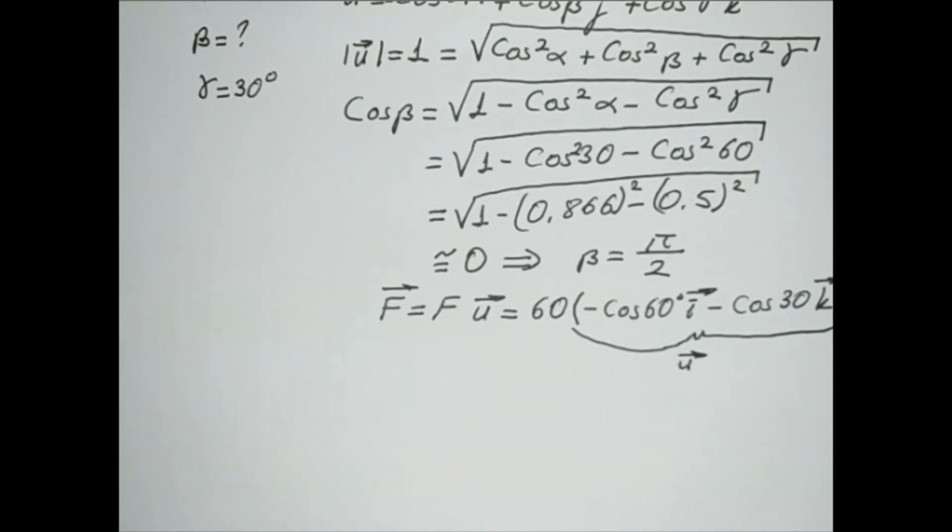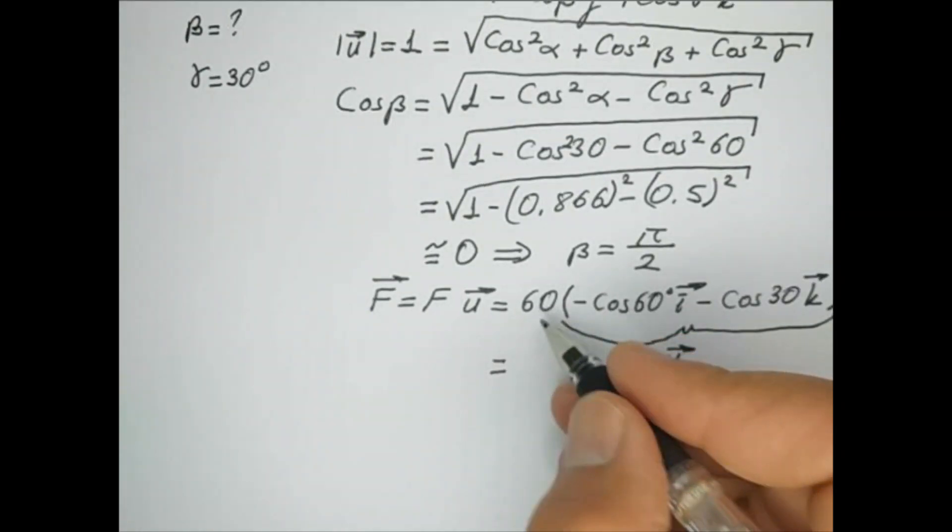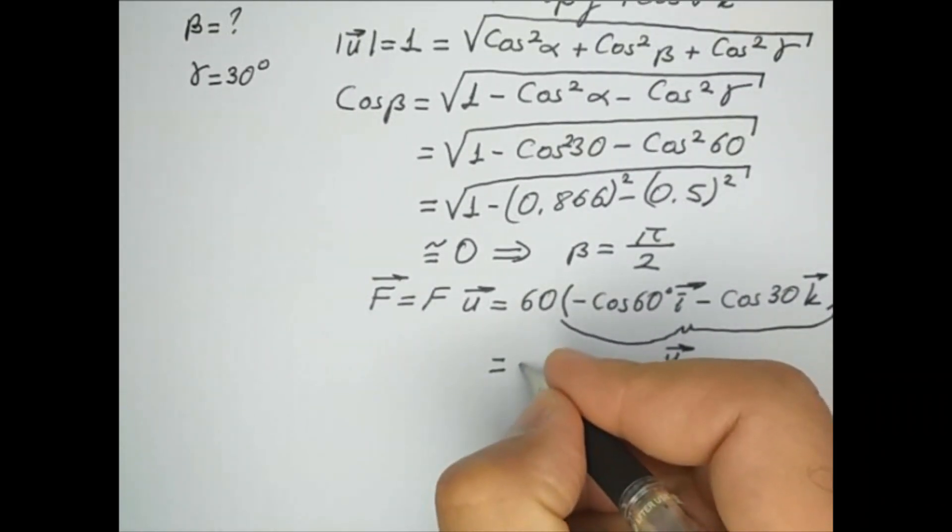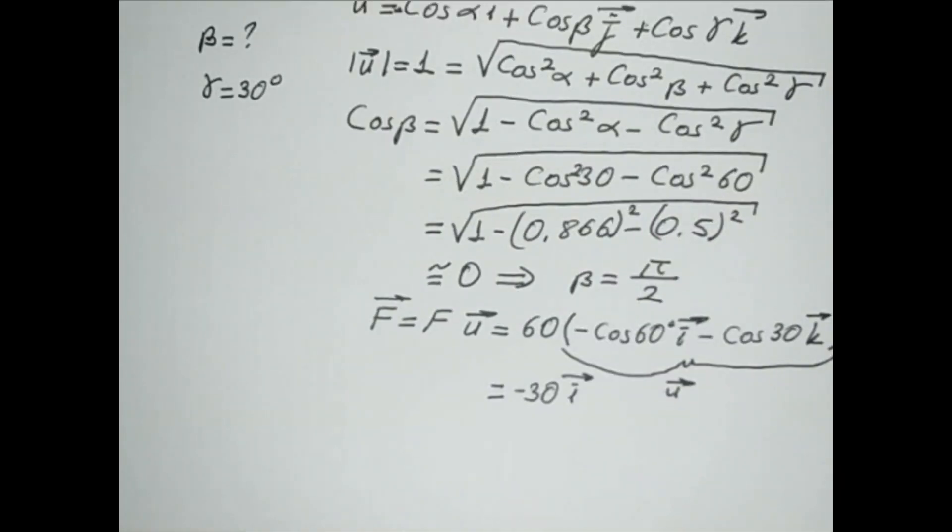If you write the expression, cosine 60 is 0.5. So this makes minus 30 i vector. And minus 51. Let me calculate once more.